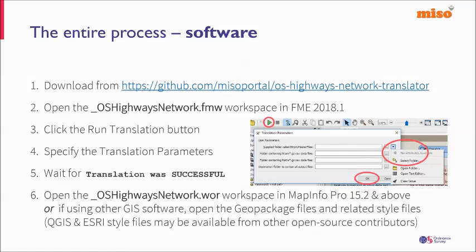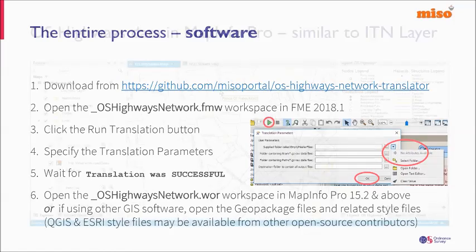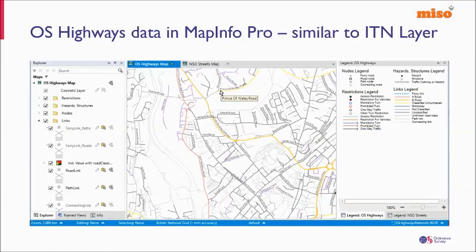Open one file in MapInfo and you'll see the whole dataset. This is part of the sample area around Exeter. Towards the left-hand side you'll see footpaths in pale grey running either side of the River Ex. There's different thematic colouring for the various kinds of roads, and they're all labelled. Hovering the cursor over a road shows it as Prince of Wales Road in the road scene. On the left in the Explorer window you can see tables opened automatically by the MapInfo workspace. The whole result is very similar to the ITN layer. There are two tabs for different map windows: the OS Highways tab and the NSG Streets window.